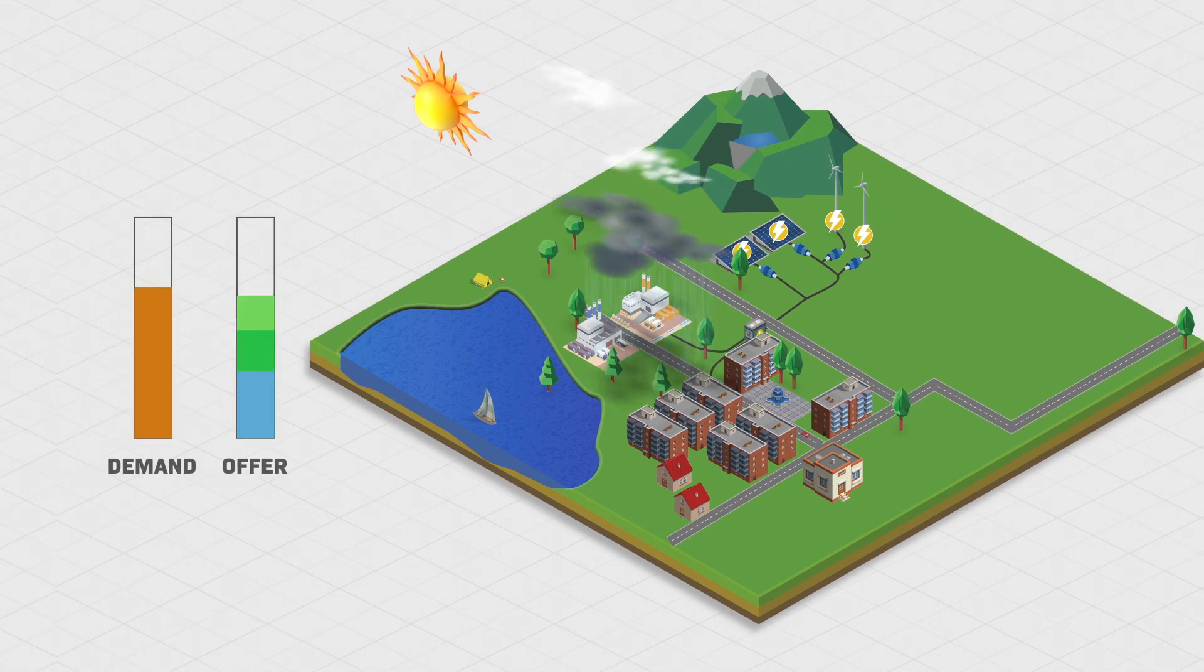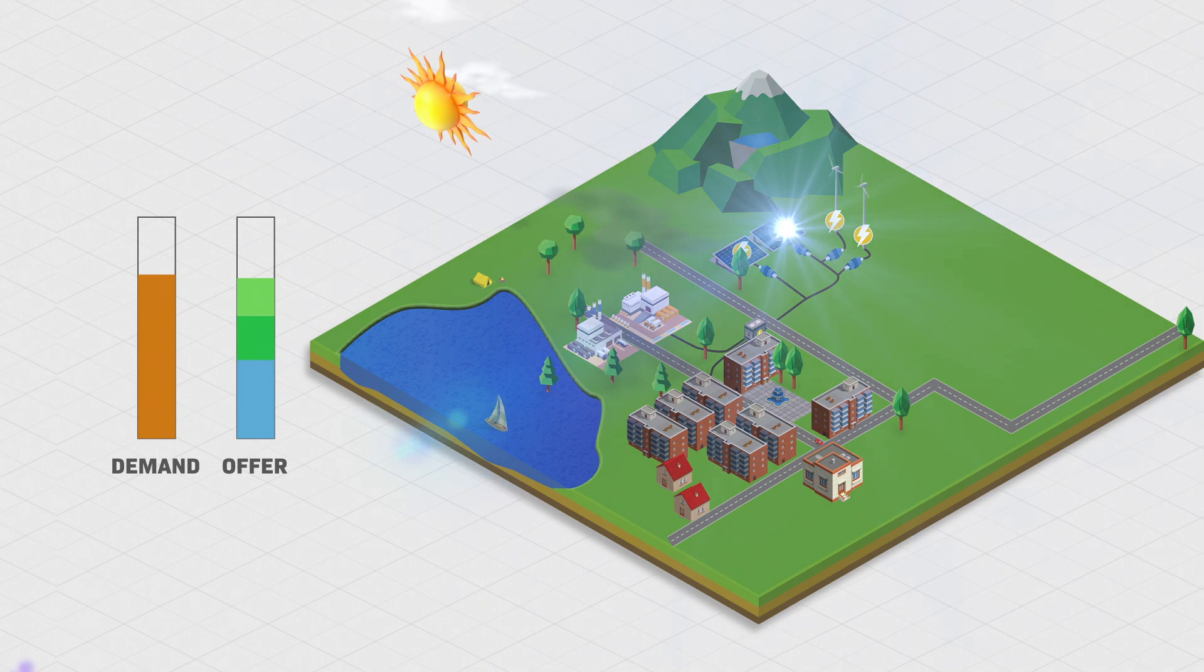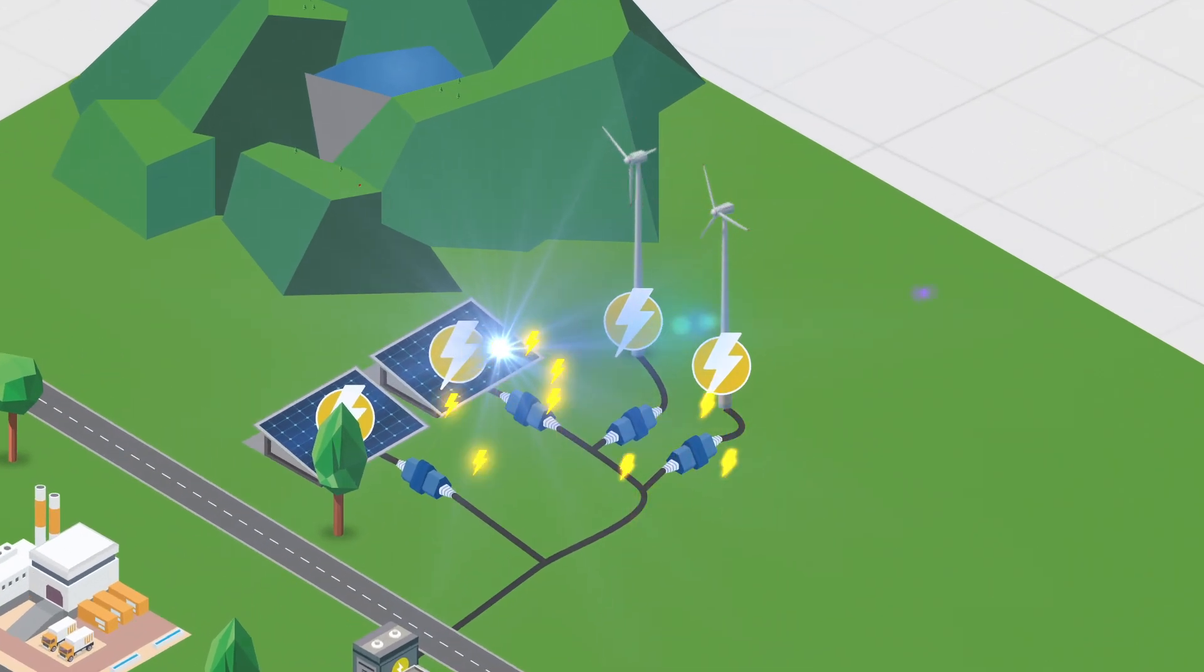When green energy supply matches demand, everything's fine. But when supply is at its peak and we don't need all of that energy, we actually don't know how to store it. So we have to cap production.